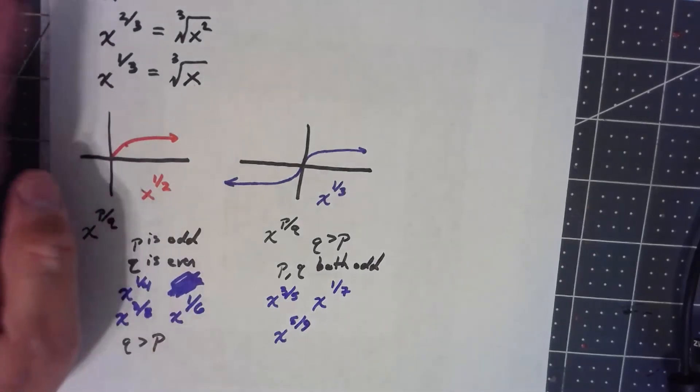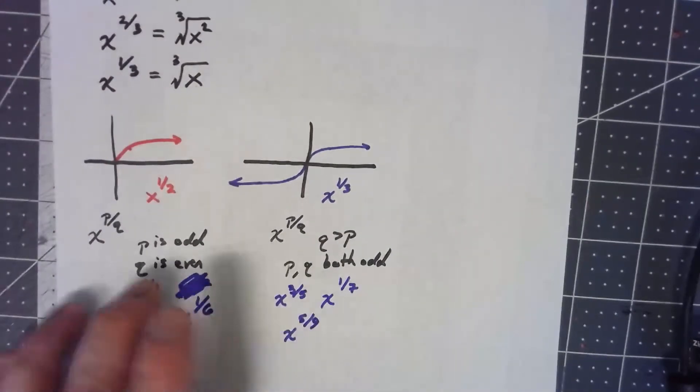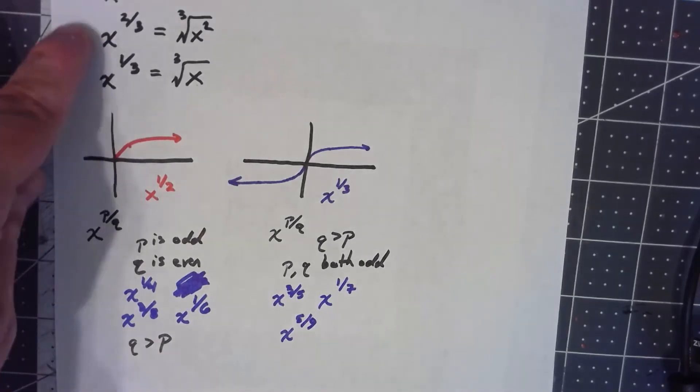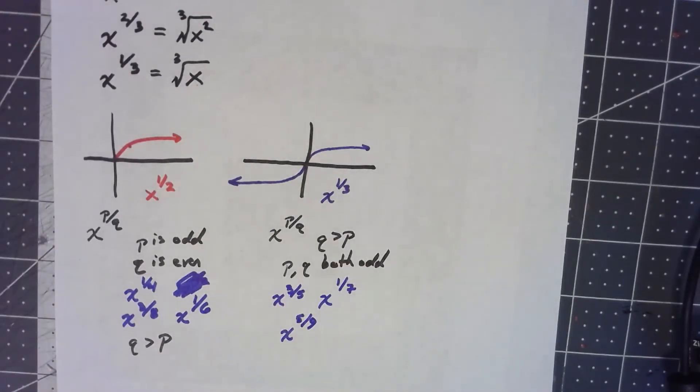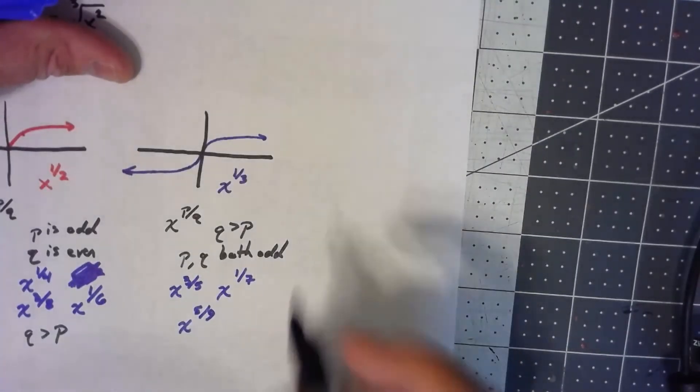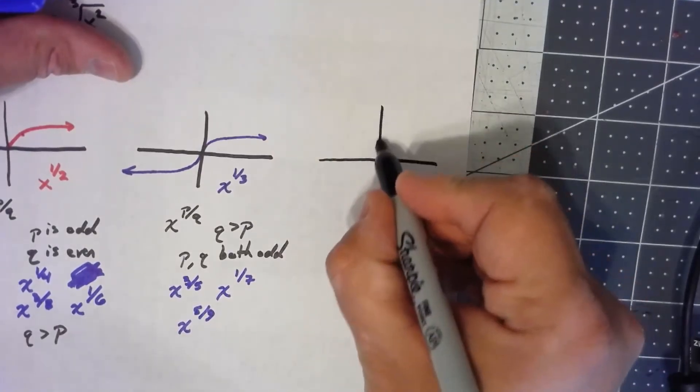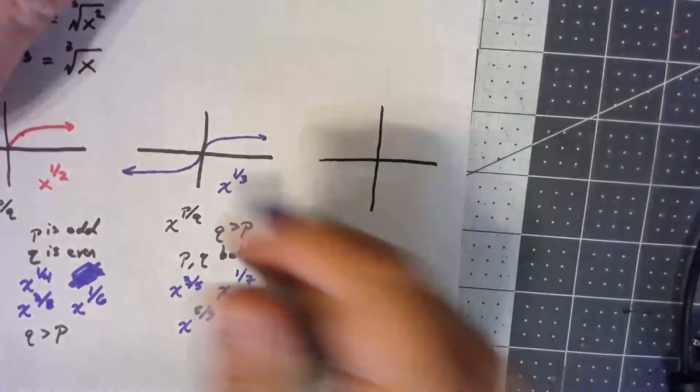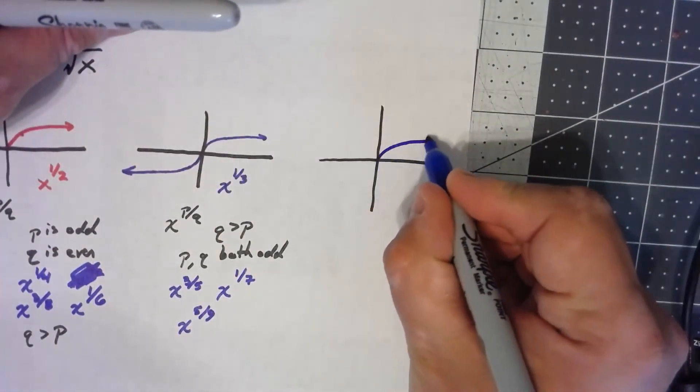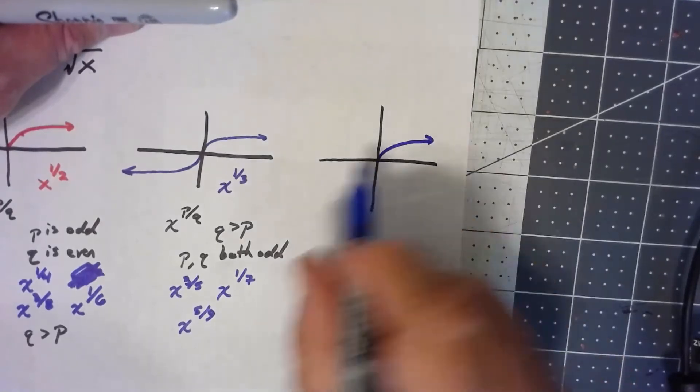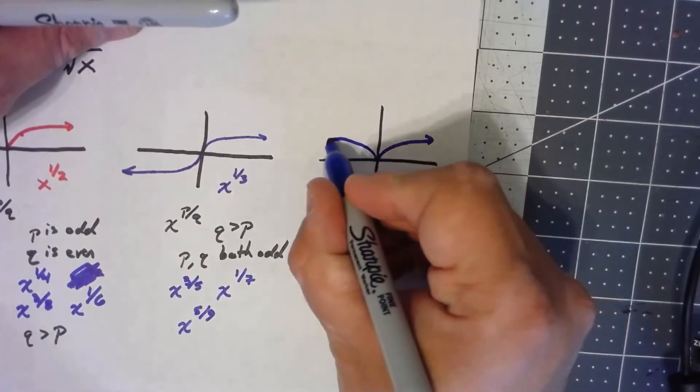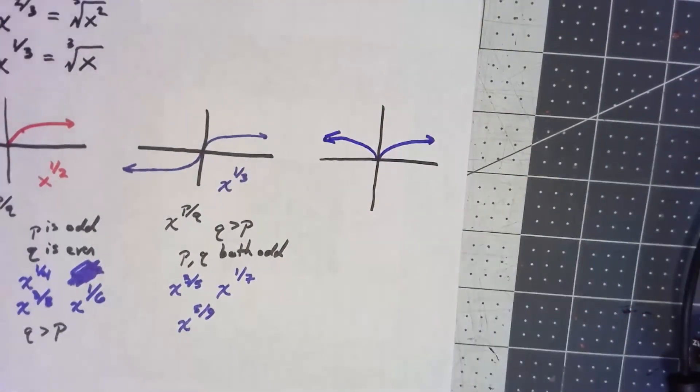But what about this x to the 2/3? Notice that both of these things had the top number being odd, and this x to the 2/3 has the top number being even. Well, this one looks just a little bit weird. It still has the same basic shape over to the right that both of the others did. But instead of going down like this and being an odd function, it's actually an even function. It's symmetric about the y-axis.